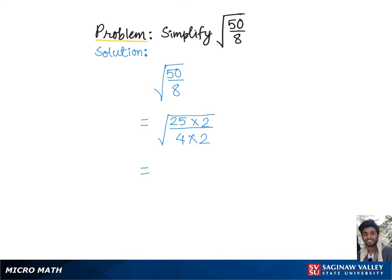Now these twos cancel each other out since one is in the numerator and another in the denominator. So we are left with 25 over 4, which can be written as 5 squared over 2 squared under square root.